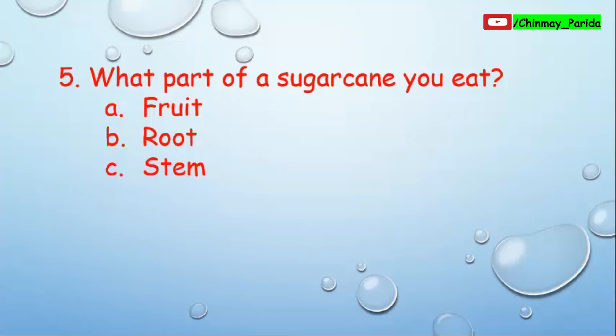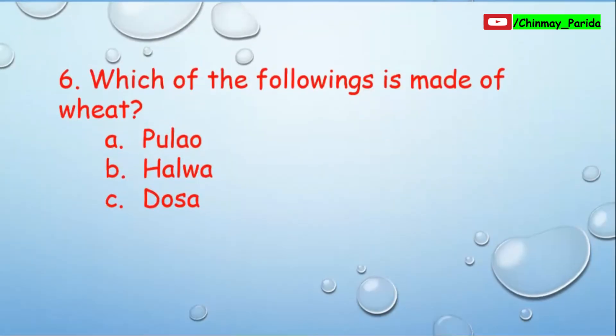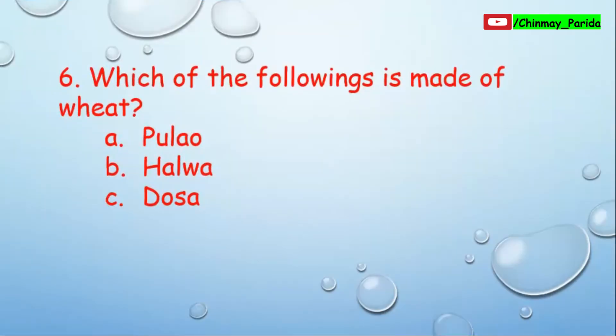Question number five: What part of a sugarcane do you eat? Option A: fruit, option B: root, option C: stem. We eat the stem of the sugarcane.